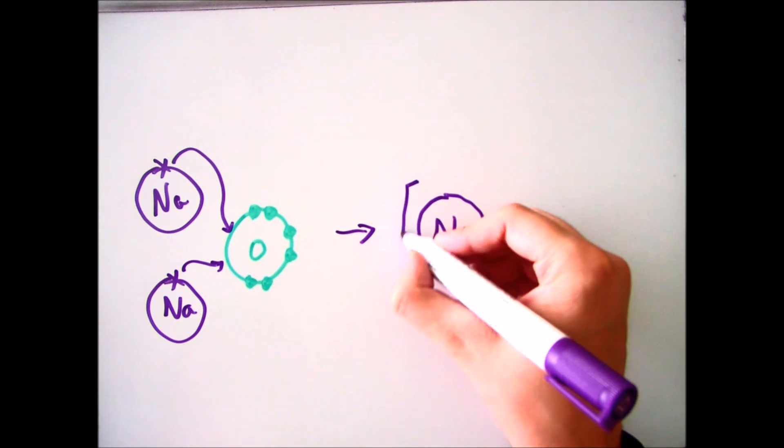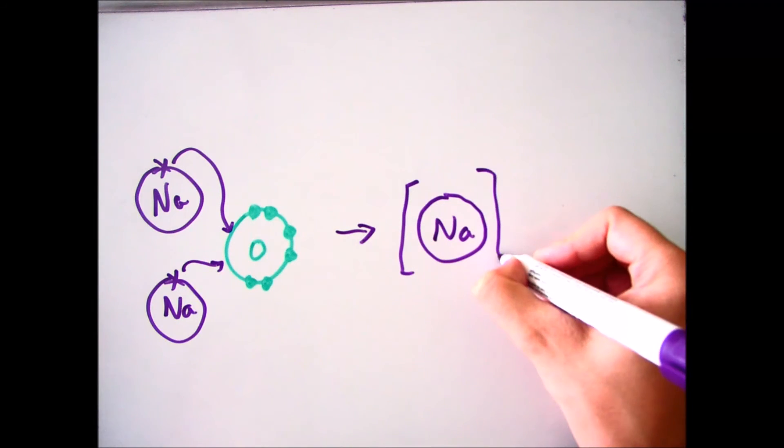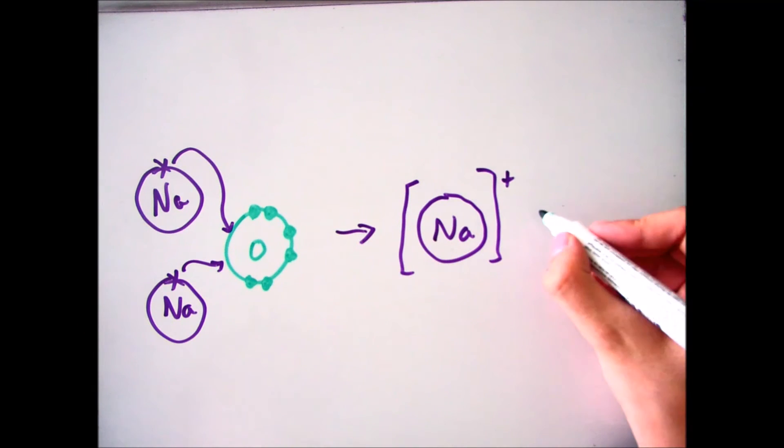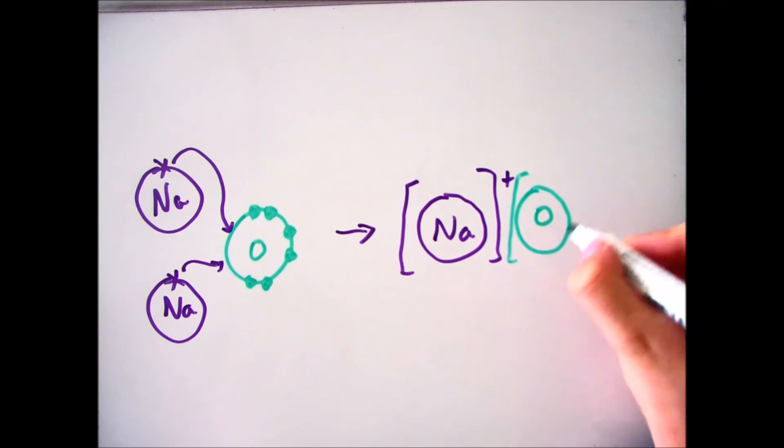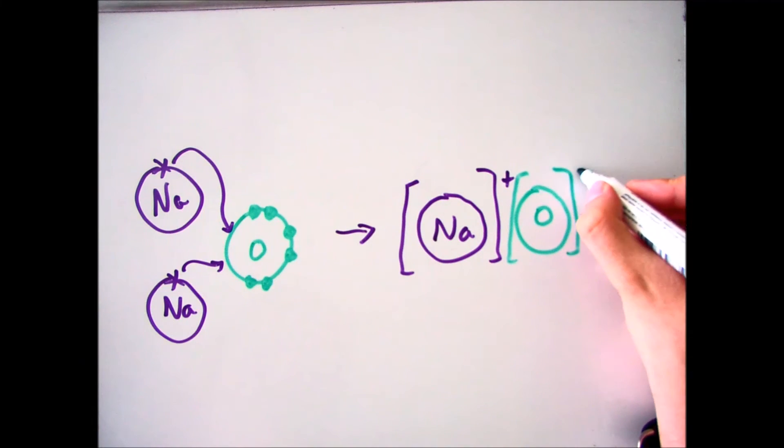So sodium, which has lost its electron, has none in this outer shell, and it's positive. I've then got my oxygen in the middle. That has gained two electrons, one from one sodium, one from the other. And that becomes 2-, and then the same with the final sodium that's remaining.